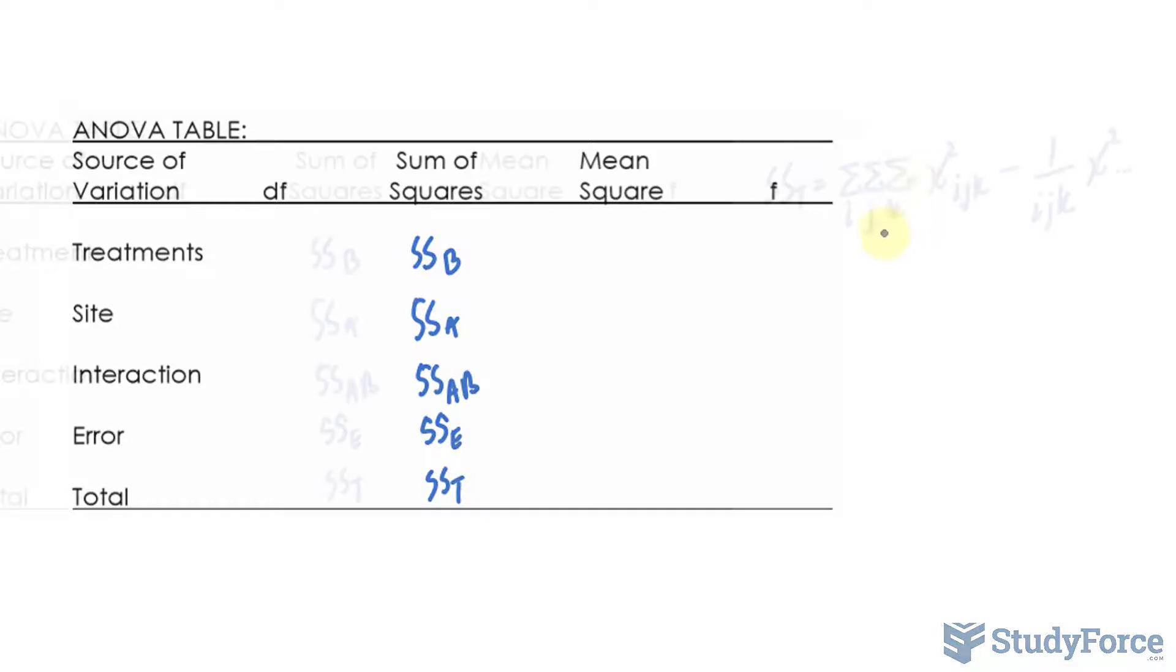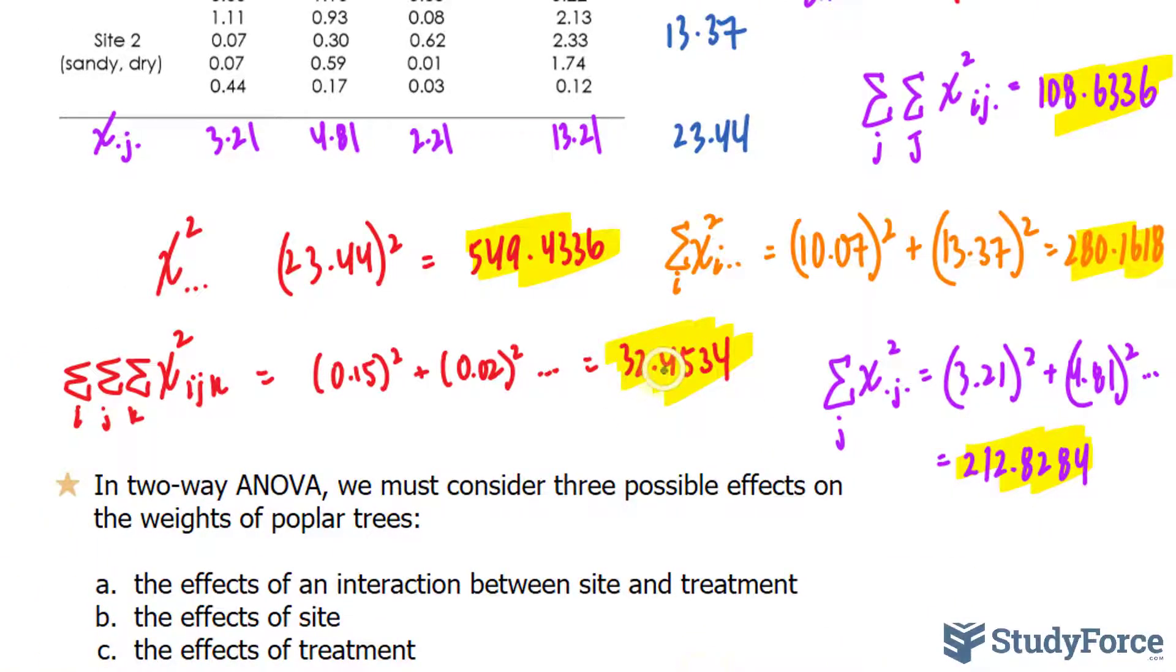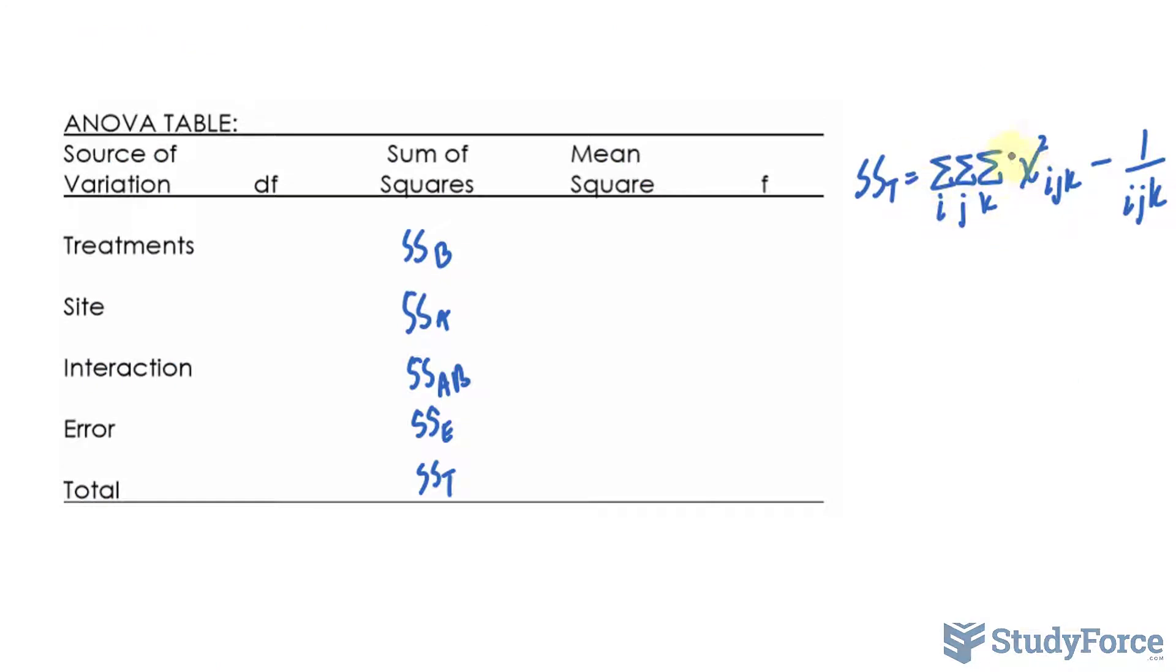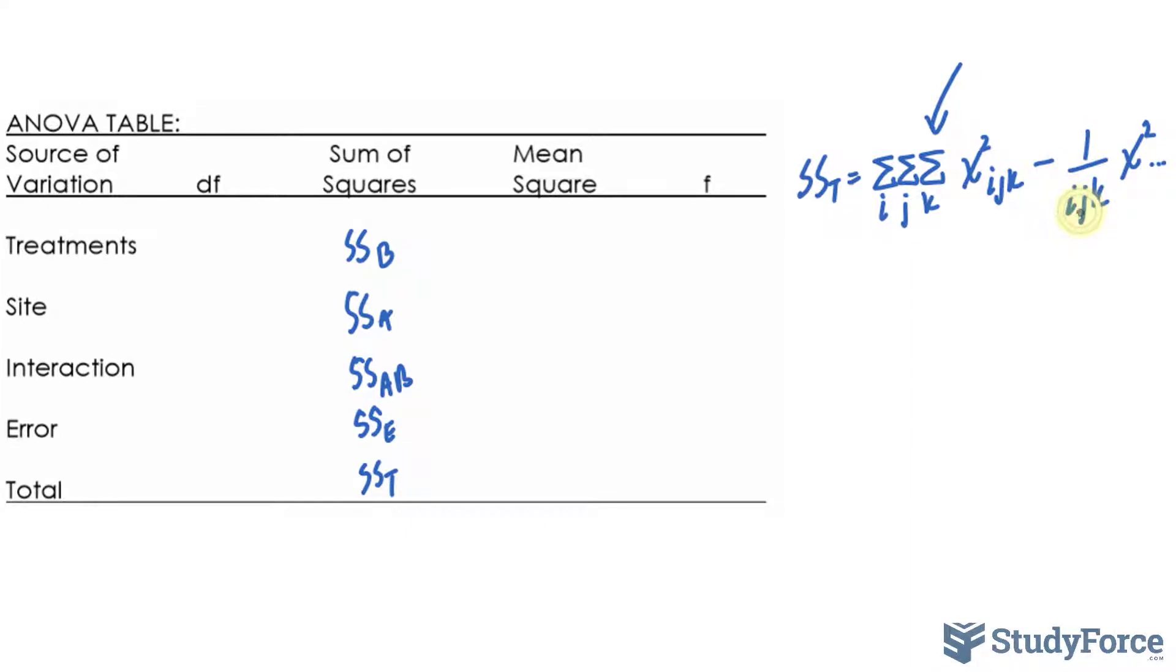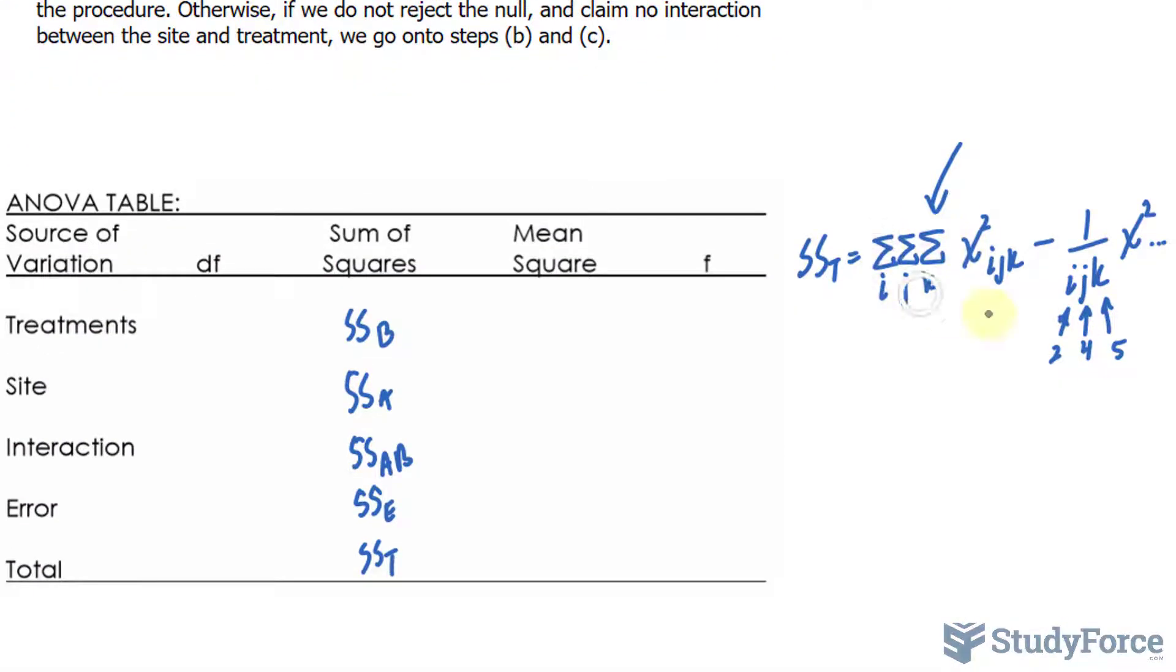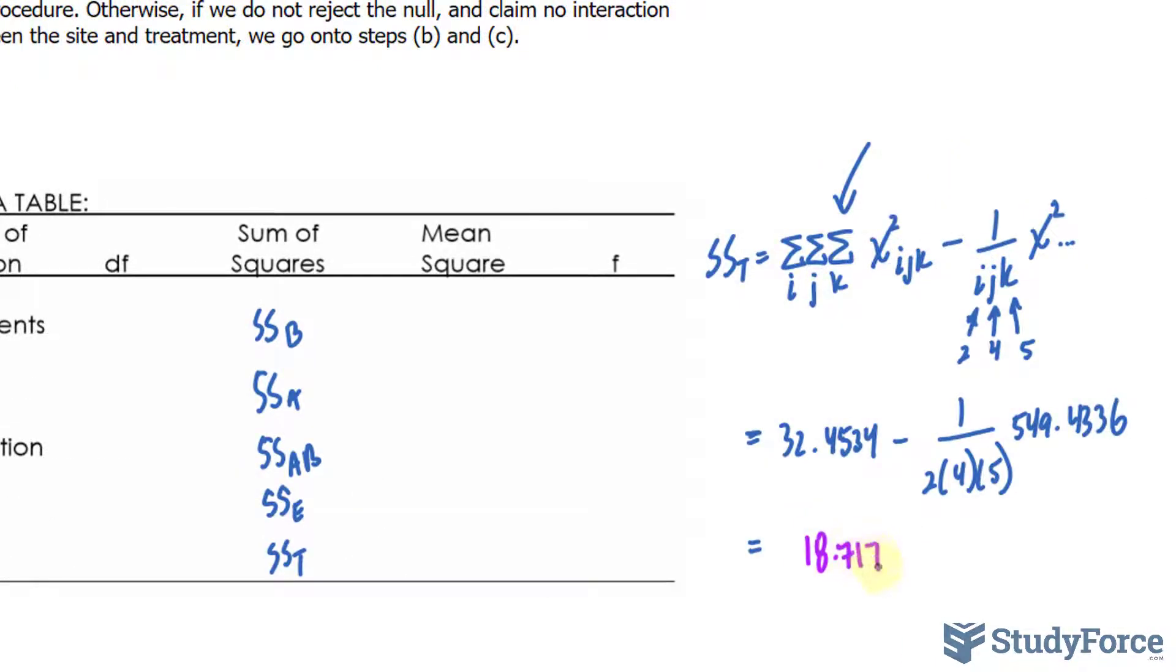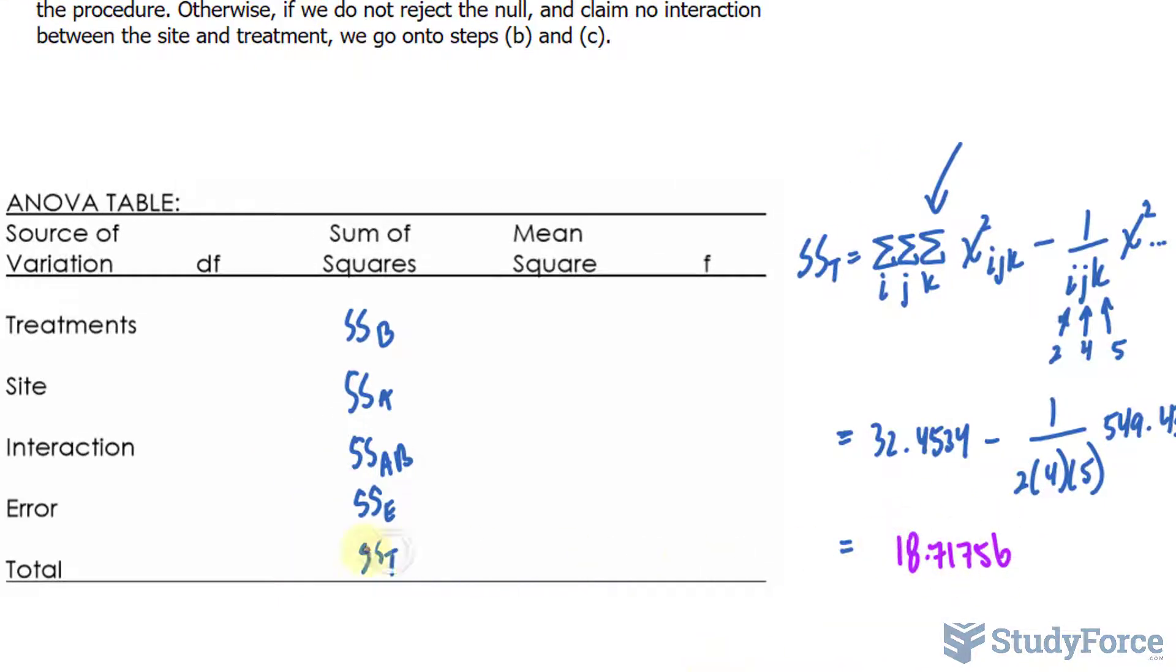To get SS sub t, we use the formula shown on the screen. You remember the sum when we found it up here? This number, 32.4534. We'll be taking that number and substituting it in for here. Then we will subtract 1 over the factors i, j, and k. i being 2, j being 4, and k being 5. x to the power of 2 subscript dot dot dot is this part, the one we found earlier as 549.4336. All of that will get substituted into this formula and you end up with your sum of squares total. Your final answer for SST should be 18.71756. So you can take this number and place it right here.